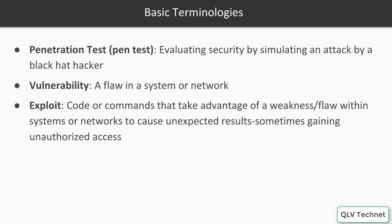Simulating meaning we are pretending to be a black hat hacker to gain access to these systems. Vulnerability is a flaw within a system or network — you can think of this like a hole to get in. Exploit is a code or commands that take advantage of a weakness or flaw within systems or networks to cause unexpected results, sometimes gaining unauthorized access. This would be something you put through the hole in order to get into the system.